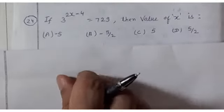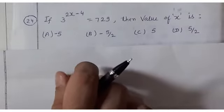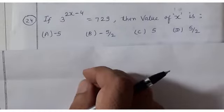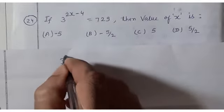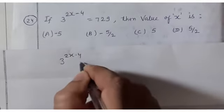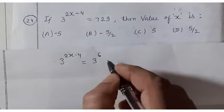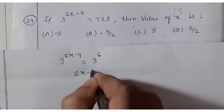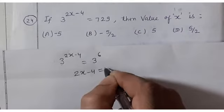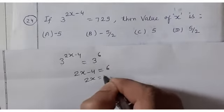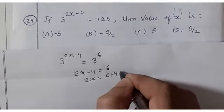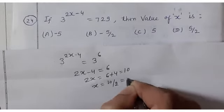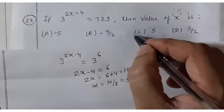Question number 24: if 3^(2x−4) = 729, find x. Since 729 = 3⁶, and the base is the same, 2x − 4 = 6. So 2x = 10, giving x = 5. Answer is C.